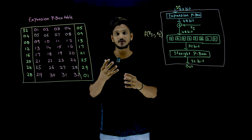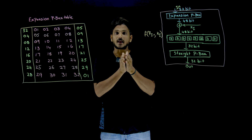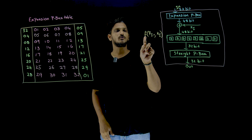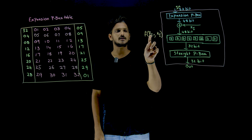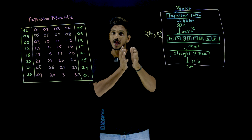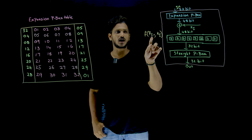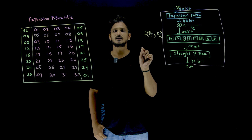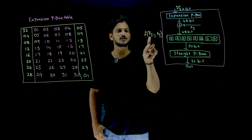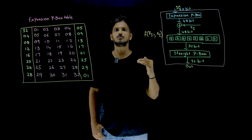Coming to today's class: when we discussed in our last class, the Feistel function is going to take the right-hand side 32 bits as input. So Feistel function f of R(i-1) — i minus 1 means from the previous round, the right-hand side 32 bits are considered as input to the Feistel function, and the key K, which is a 48-bit key, is also taken as input. These two are taken as input to the Feistel function and you are going to get 32-bit output.